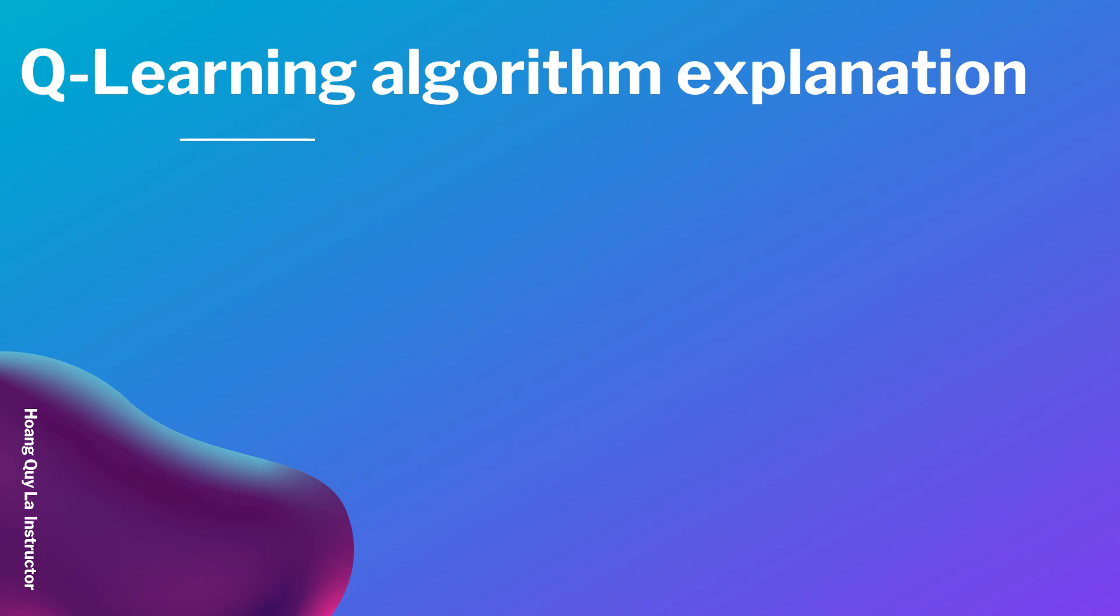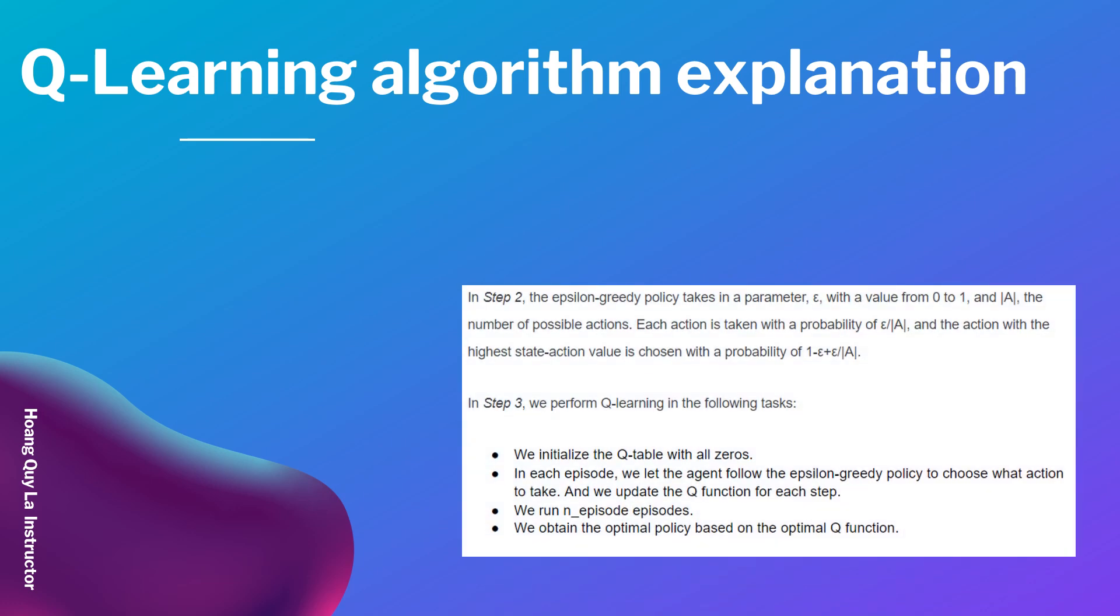Hi, let's continue with our section. In this video I will explain what is happening step by step after we implement the Q-Learning algorithm. So in step 2, the epsilon-greedy policy takes in a parameter epsilon with a value from 0 to 1.